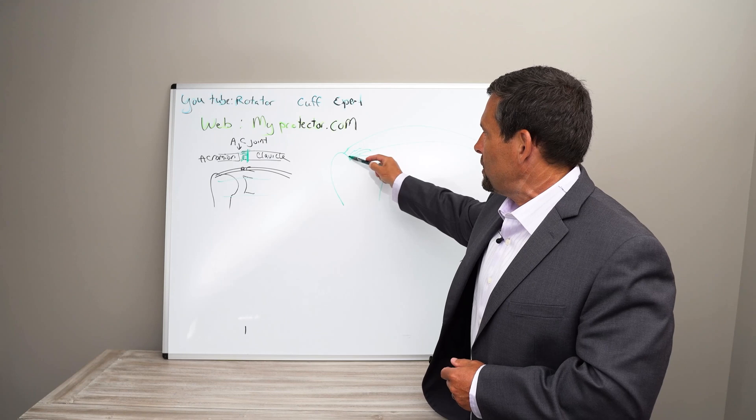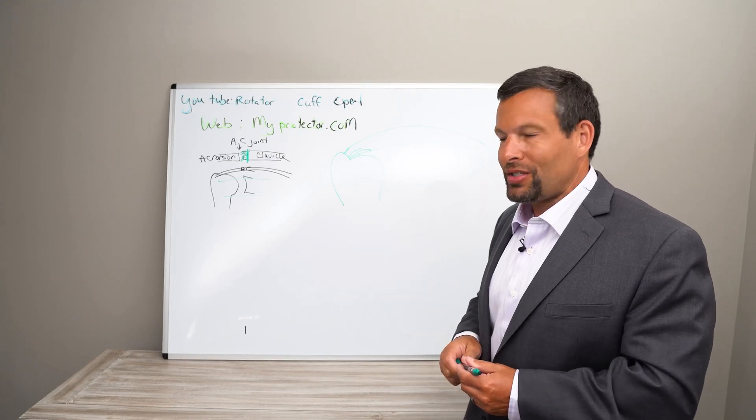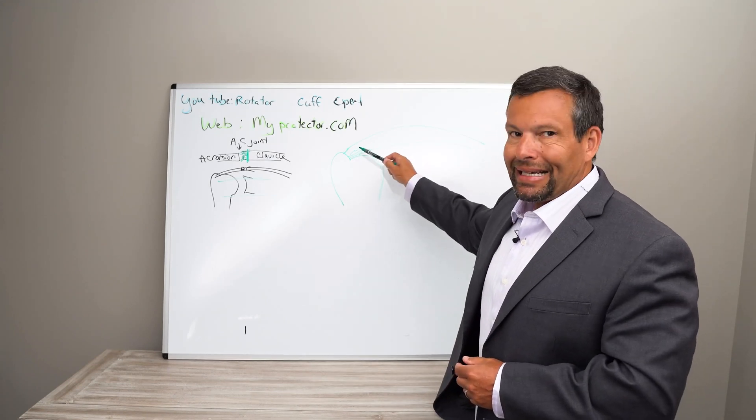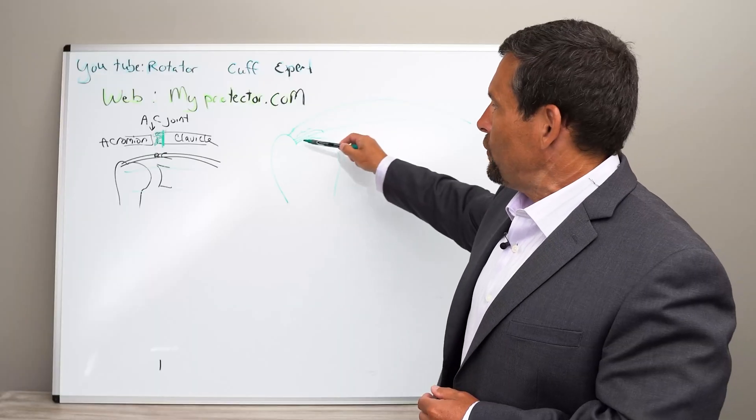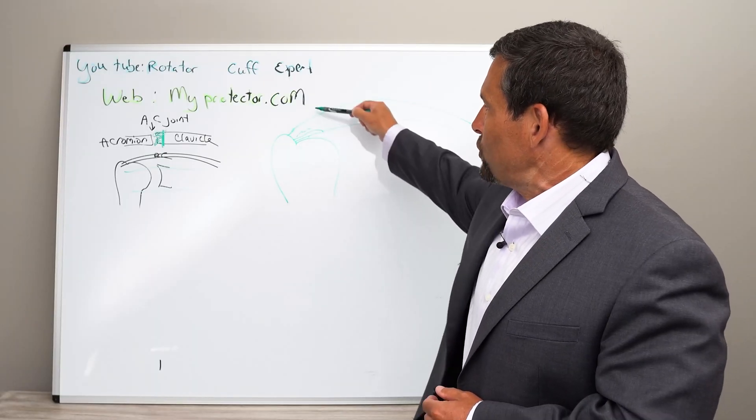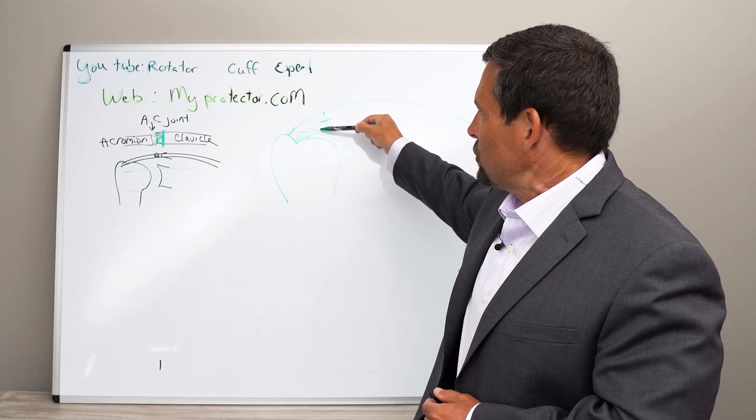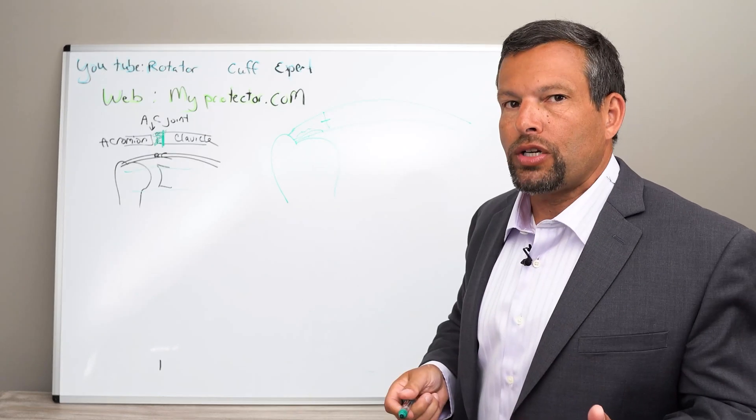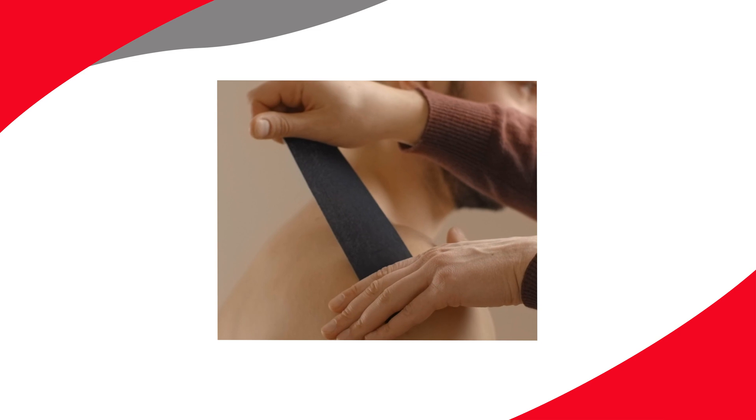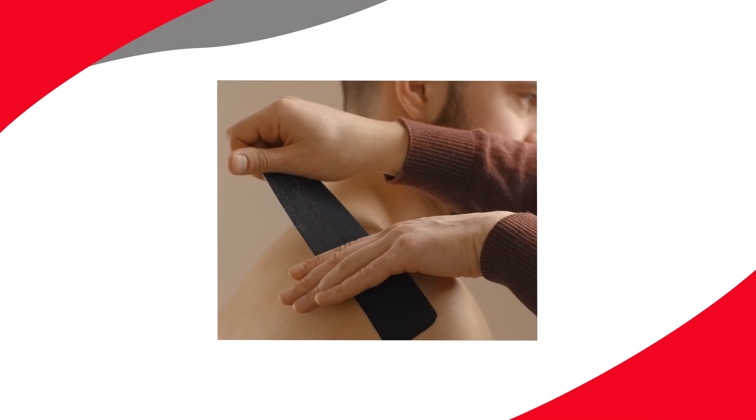The next level would be a partial thickness tear. The low grade partial thickness tear is much more like tendonitis than it is anything else. And so if it's a low grade, less than 50% the way through, right? So this is 100% and this is 50%, so we're less than 50%. See, that's a low grade partial thickness tear. And oftentimes, low grade partial thickness tears can heal on their own.